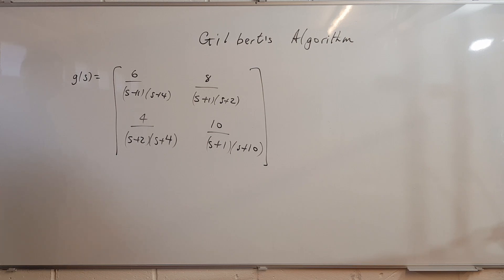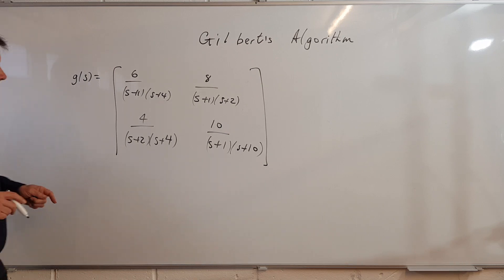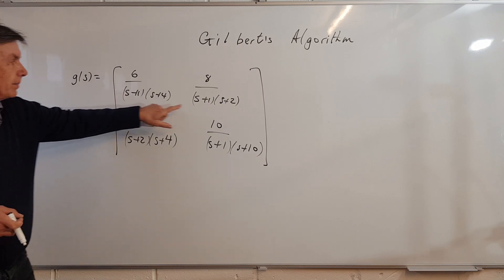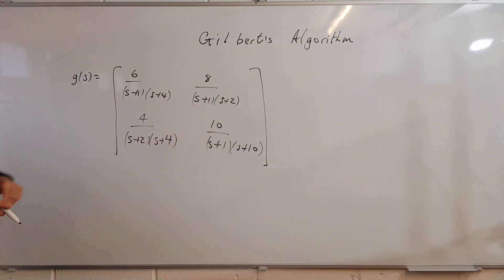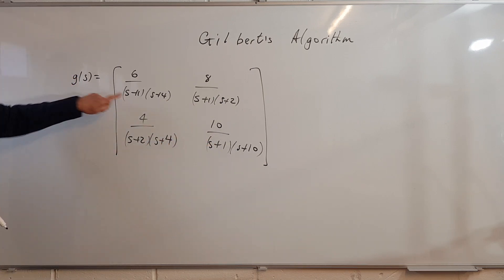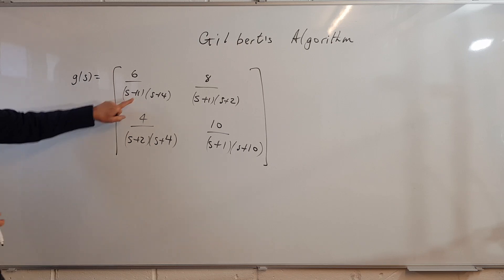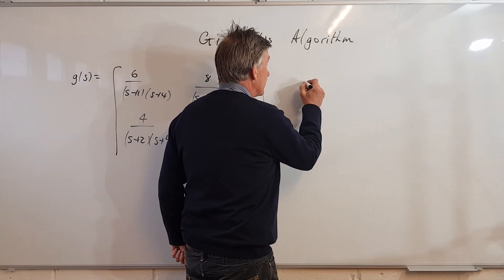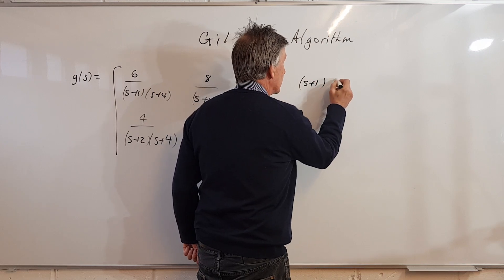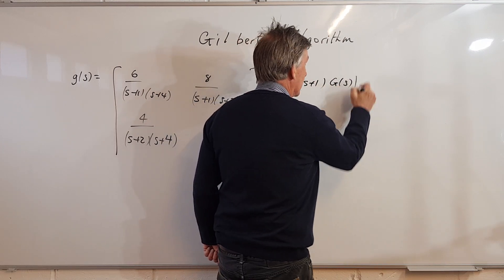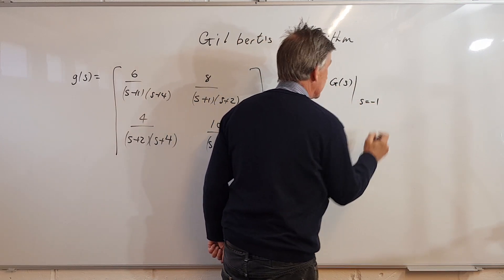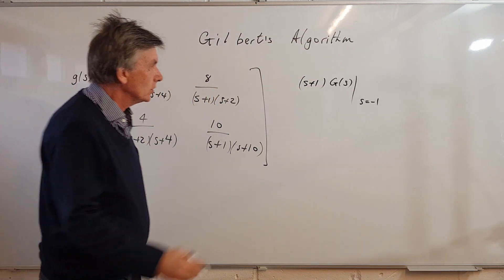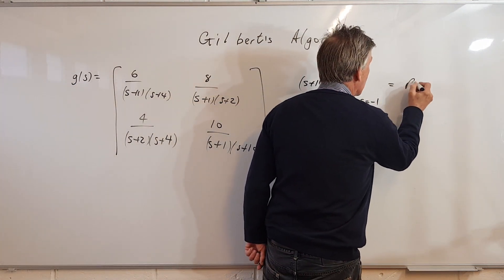We can recall back to the lectures on this. The first thing we do is work out some matrices associated with each of the poles in the transfer function. We start off with the s+1 term, and what we do is work out (s+1) multiplied by G(s), evaluated at s = -1. We can call this R1.